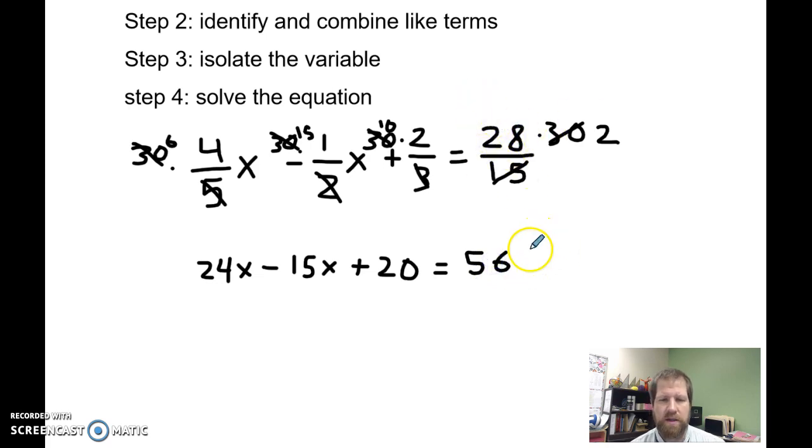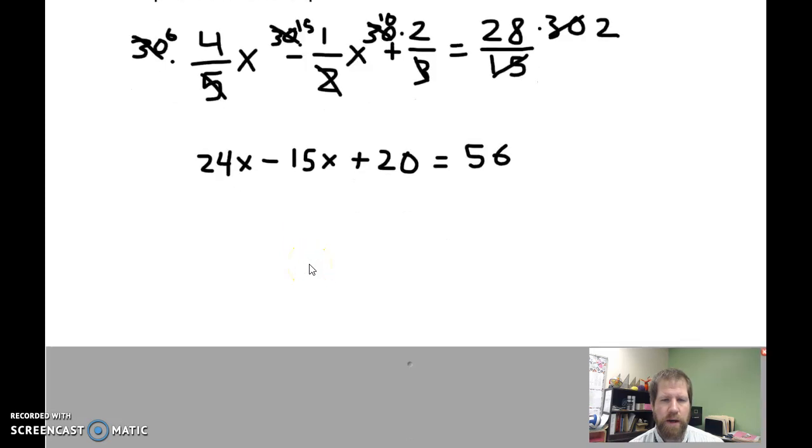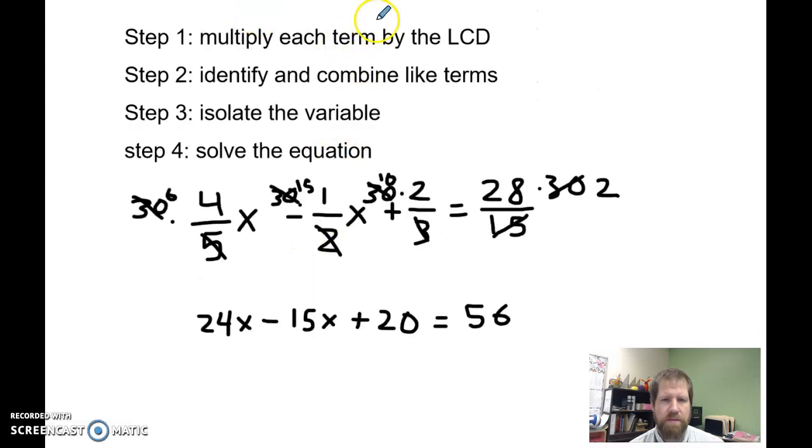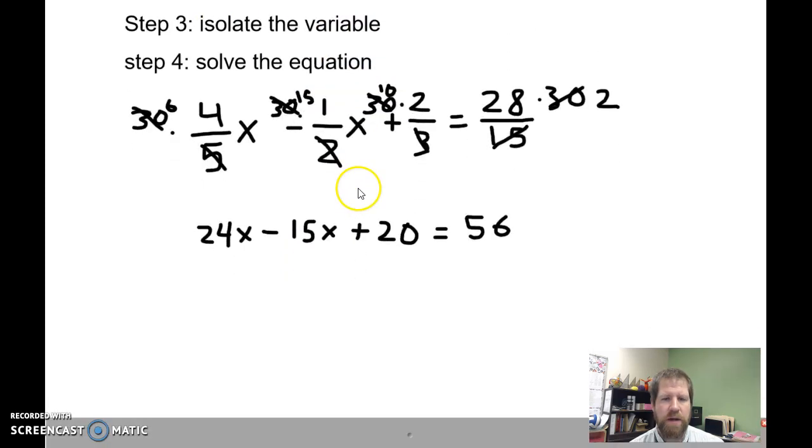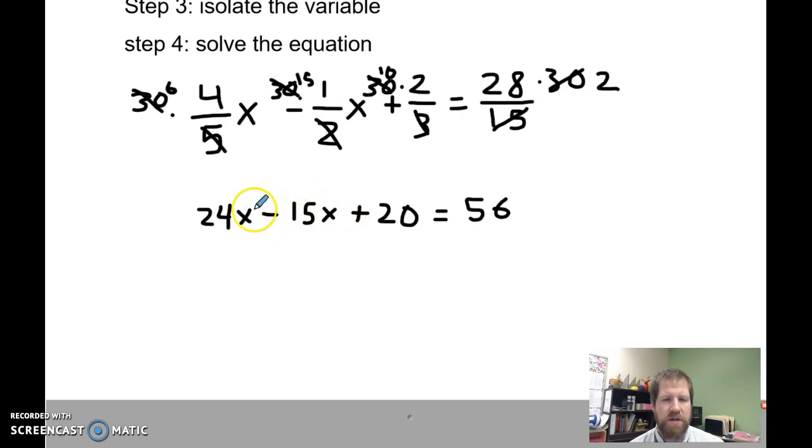So I finished my first step. Now I'm going to identify and combine like terms. I've just got these two x values. They're right next to each other. They're even in an easy order for me to subtract. So I'm going to go ahead and just do that. 24x minus 15x is going to be 9x plus 20 equals 56.